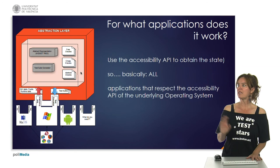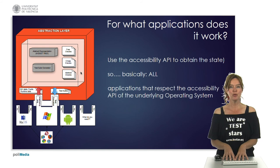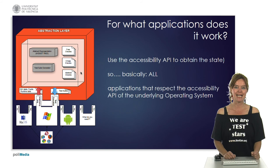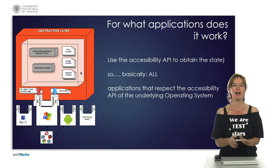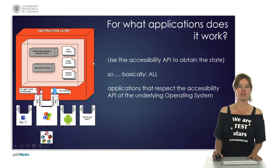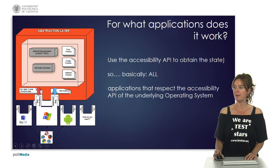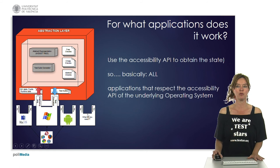For which applications does this work? Test* uses the accessibility API at the operating system level to obtain the state of the graphical user interface. Since this is at the OS level, we can test all applications that respect the accessibility API of the underlying operating system. The architecture of Test* includes an abstraction layer into which you can plug in a specific component for a specific operating system. So for PowerPoint we plug in a Windows component, but we can also have plugins for Mac OS, Android, or anything else needed.